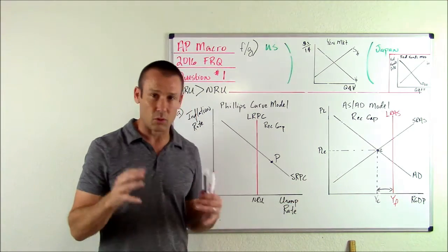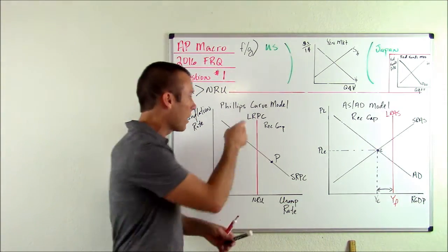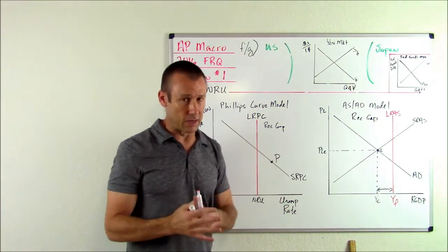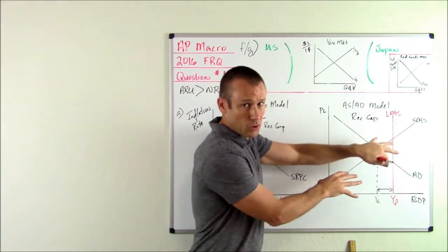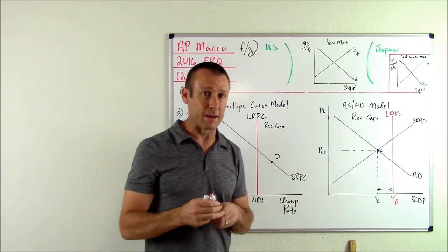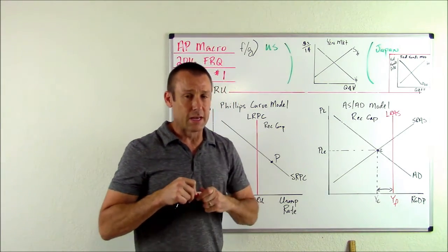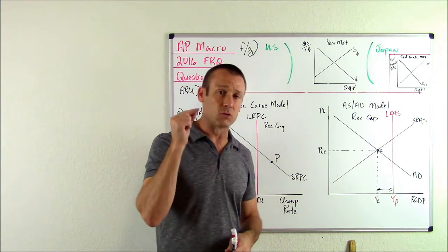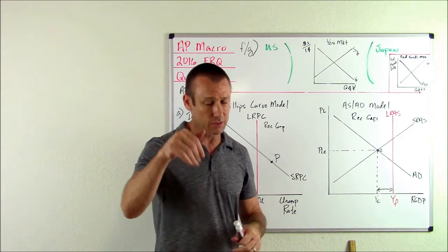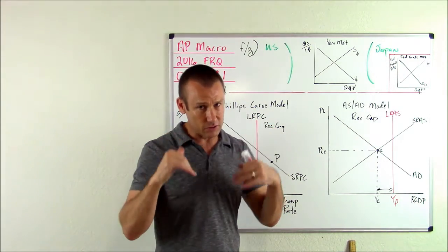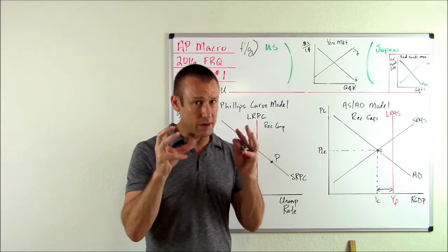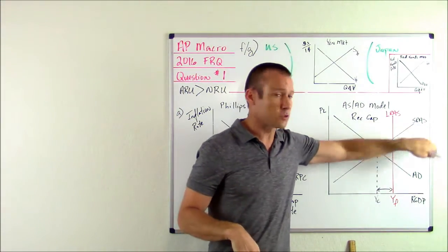A recessionary gap means we have excess available workers. What we want to understand is what's happening to nominal wages. Excess workers means the price of labor is going to go down — nominal wages are going to go down. That's a cost of production going down. When the cost of production — wages — goes down, our short-run aggregate supply is going to shift right; it's going to increase.